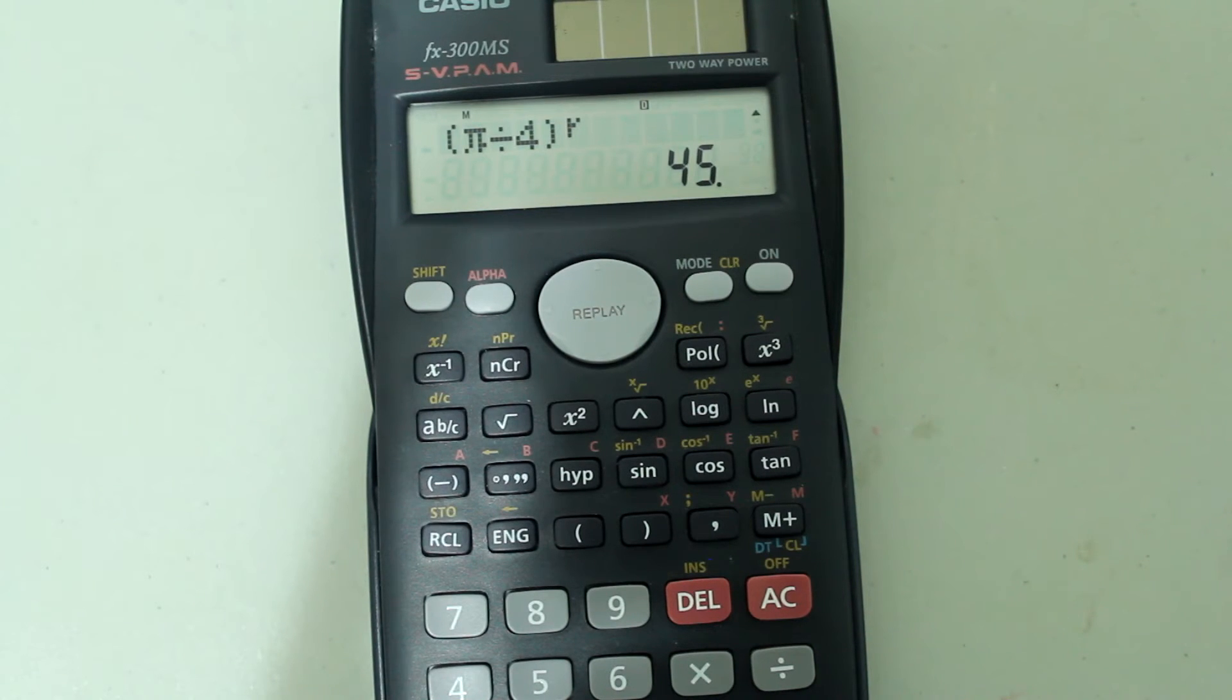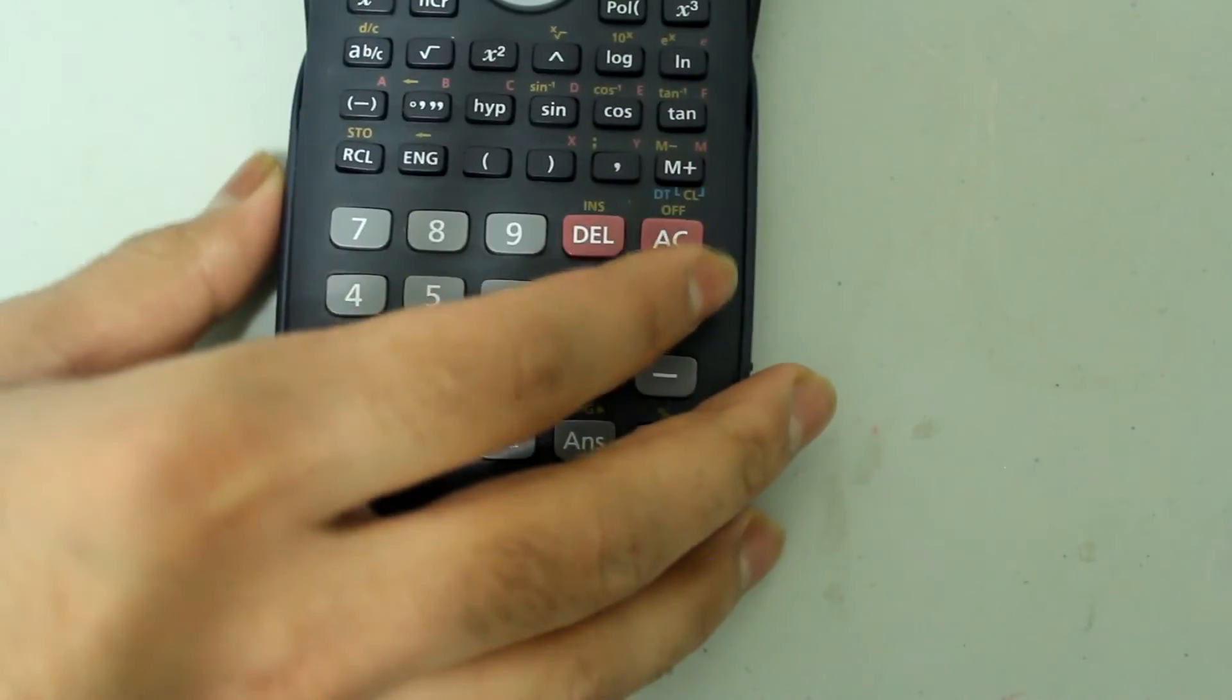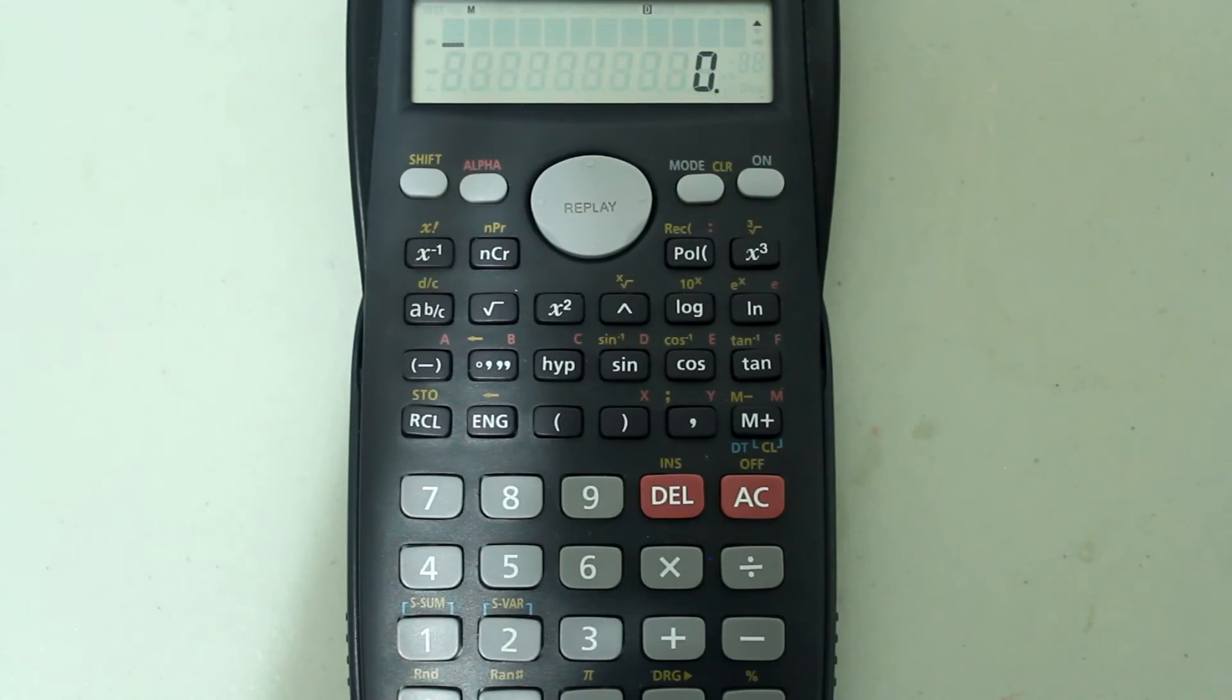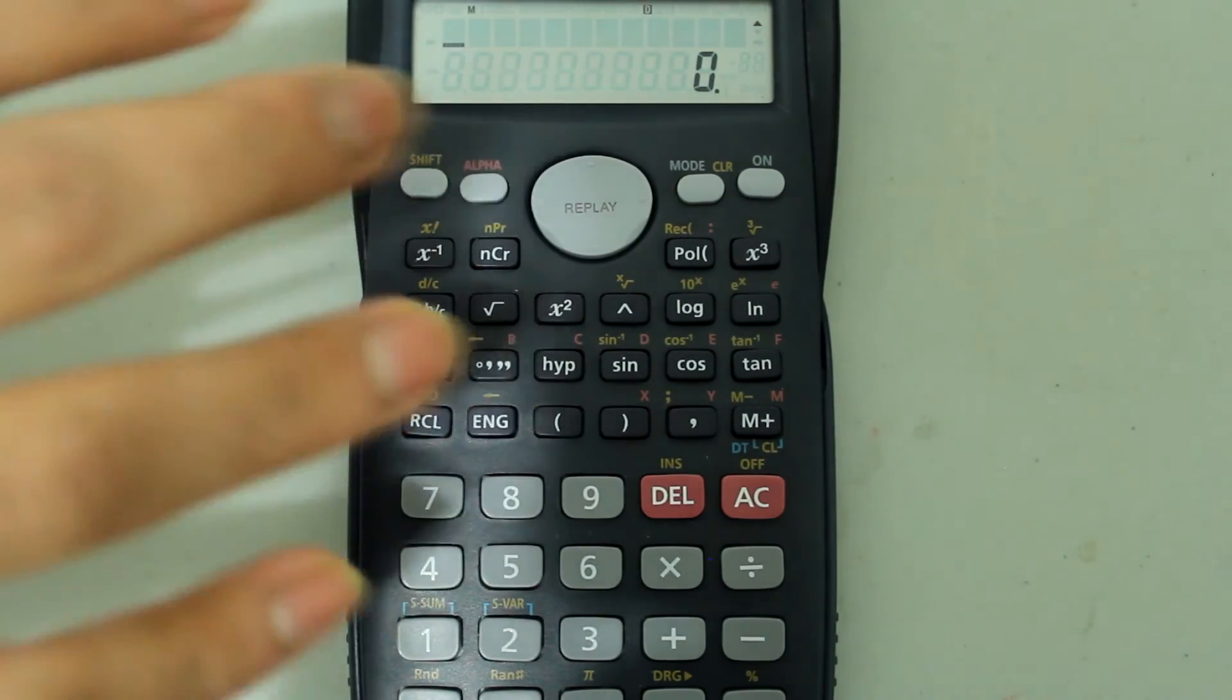You can also use this feature in calculations. For instance, I am in degree mode right now, and if I wanted to make an entry in radians, let's say we want to do cosine of pi over 3, but I am in degree mode, I can do that.